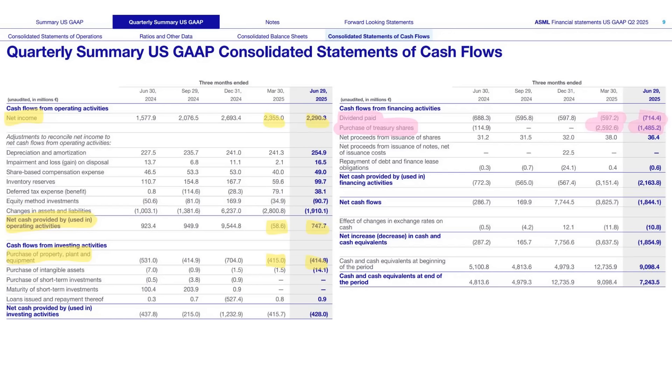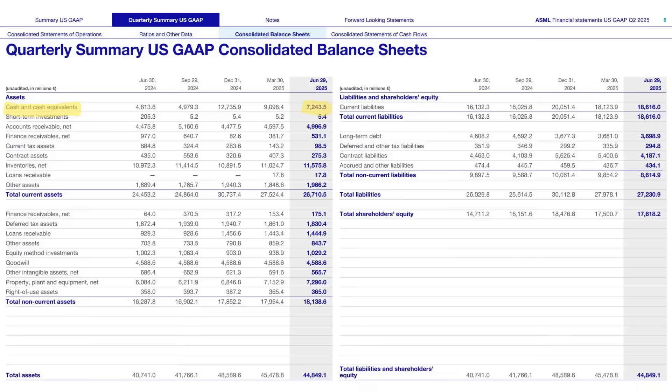Now the balance sheet — pretty simple, just one line item highlighted. $7.2 billion in cash and equivalents. That's down from over €9 billion in Q1 and €12.7 billion at the end of 2024 — most of that decrease due to the stock buybacks.